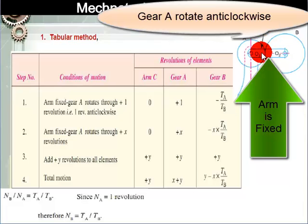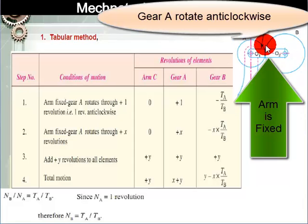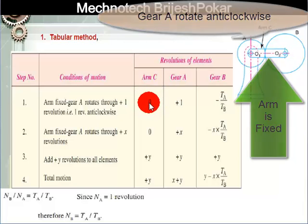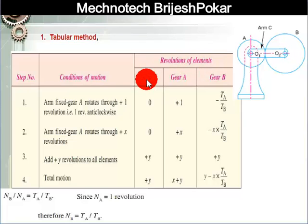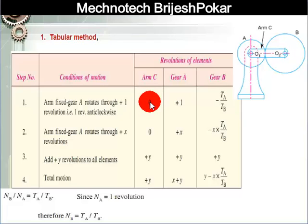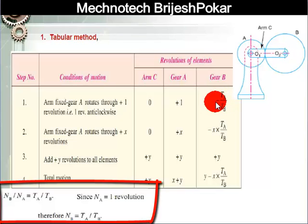Arm C is fixed and gear A rotates in an anticlockwise direction. Because the arm is fixed, we consider its rotation as zero. There are three elements: arm C, gear A, and gear B. Arm C has zero rotation; gear A has one rotation in the anticlockwise direction (taken as positive); and gear B has a rotation of negative Ta/Tb in the clockwise direction.